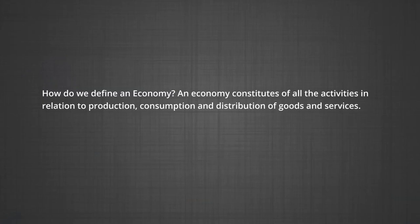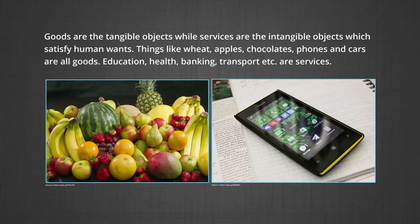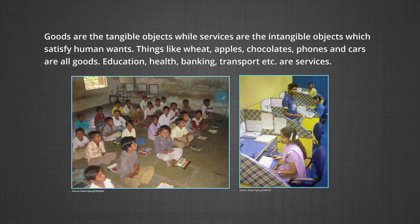So how do we define an economy? An economy constitutes of all the activities in relation to production, consumption, and distribution of goods and services. Goods are tangible objects which are used to satisfy human wants, and services are intangible objects which are used to satisfy human wants as well. Things like wheat, apples, chocolates, phones, cars are all goods. Education, health, banking, transport, etc. — these are services.